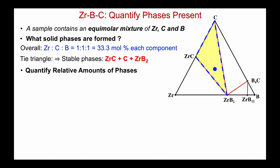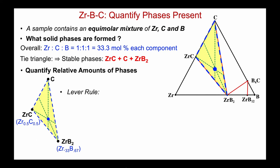The composition lies in the triangle where the stable phases are ZrC, carbon, and ZrB₂. We can also quantify the relative amounts of the phases using the lever rule applied to our tie triangle — the length from the composition to the opposing side of the triangle over the overall length gives us the percent of each phase. Going through those measurements, we find roughly 16.7% carbon, 33.3% ZrC, and 50% zirconium diboride.